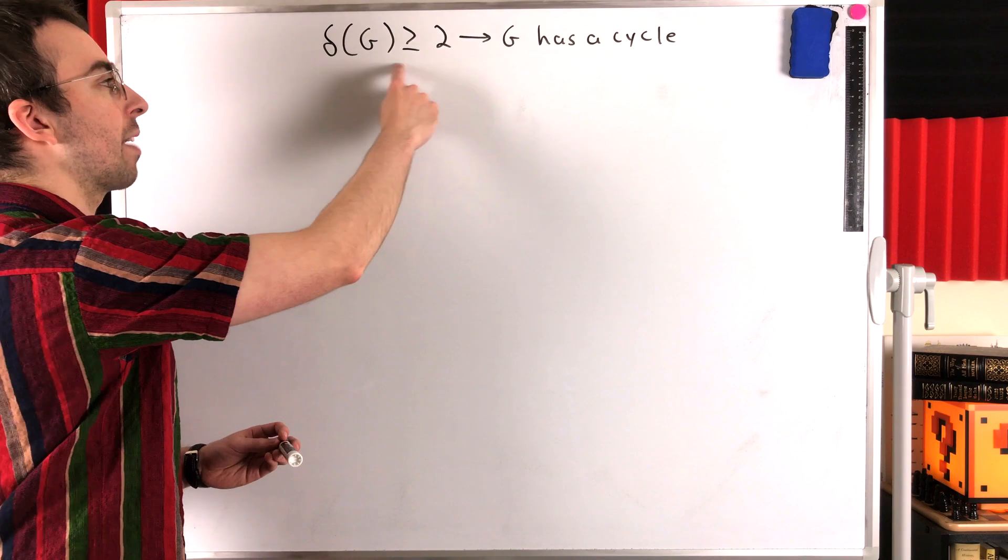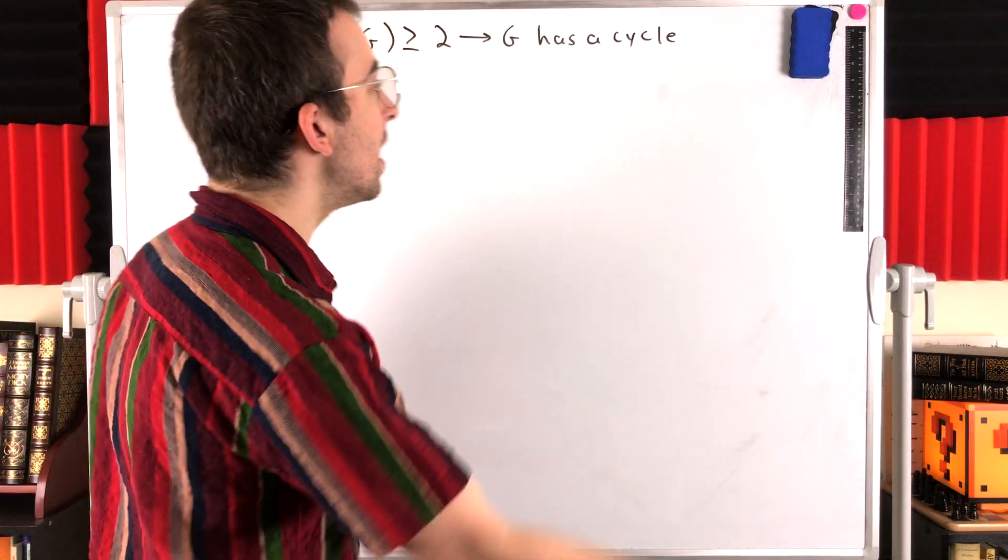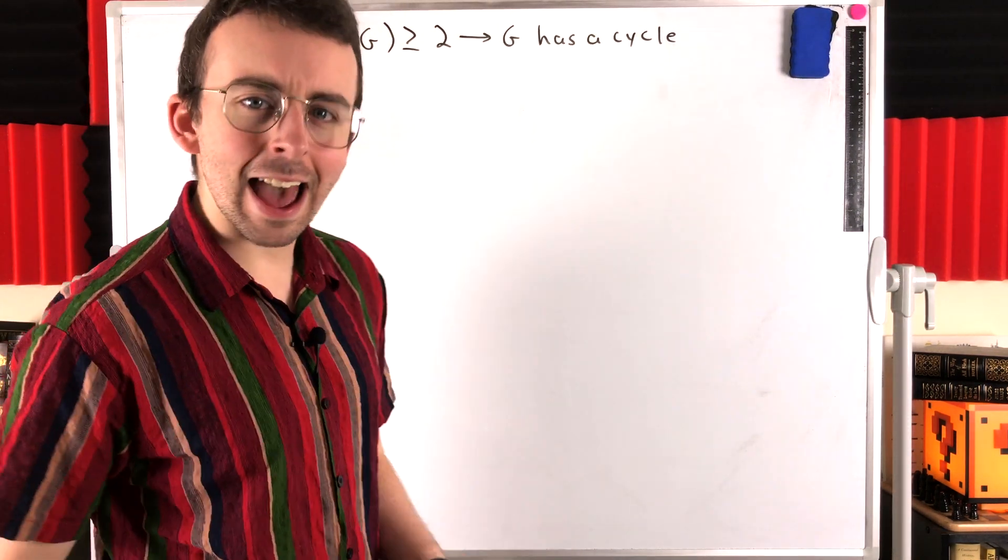That's what we'll be going over in today's Wrath of Math lesson. If the minimum degree of a graph G is at least two, then G has to have a cycle.